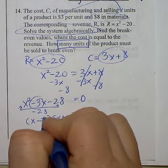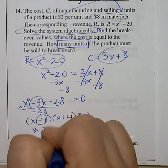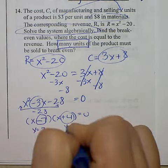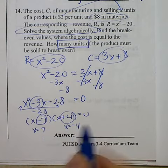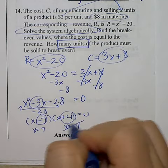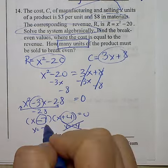So to solve this, I can see one answer is X equals 7, and the other is X equals negative 4. Now X represents the number of units of a product. You can't have a negative number of products. So the answer is 7.